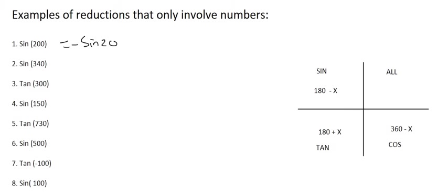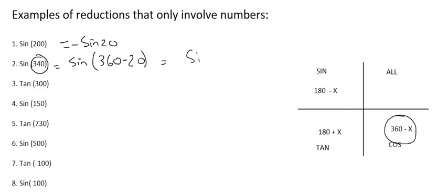The next one is sin of 340. First, locate where 340 is on the CAST diagram — that falls in the fourth quadrant. We rewrite it as 360 minus 20. That becomes sin 20, because if there were an x there, you would say sin x. Because sin is negative in that quadrant, the answer is negative sin 20.